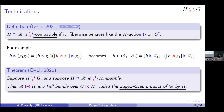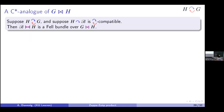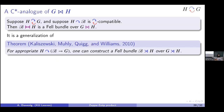The theorem: if H and G act on each other to give a Zappa-Szép product, and H acts on a Fell bundle B over G in this compatible way, then the construction I described actually is a Fell bundle — and it is a Fell bundle over the Zappa-Szép product. We call this the Zappa-Szép product of B and H. This genuinely generalizes the semi-direct product Fell bundles constructed by Kaliszewski, Muhly, Quigg, and Williams — their result has one action instead of two.